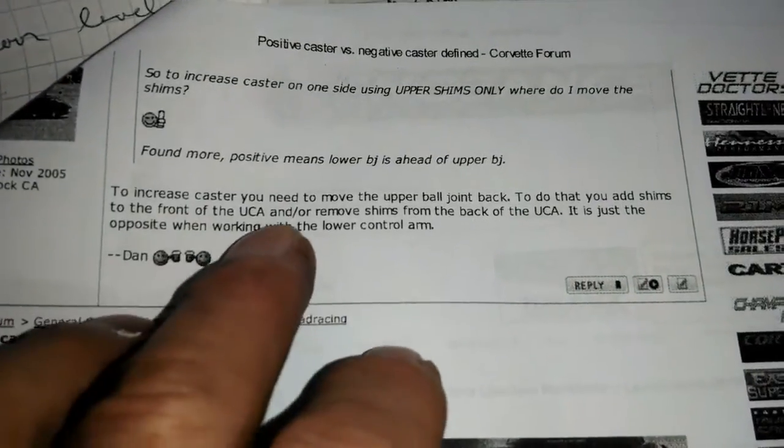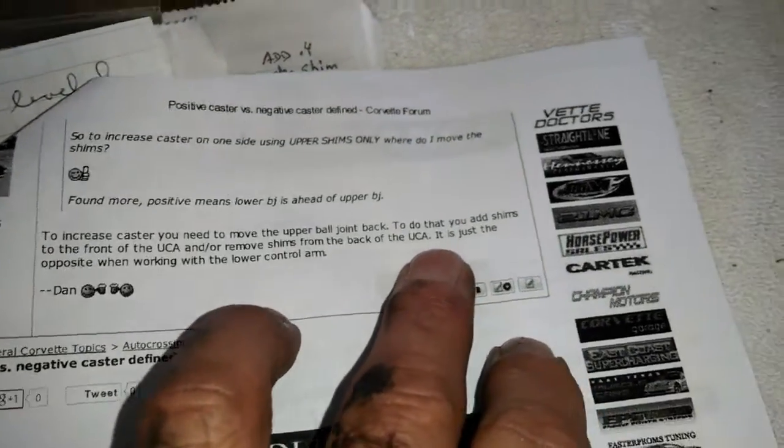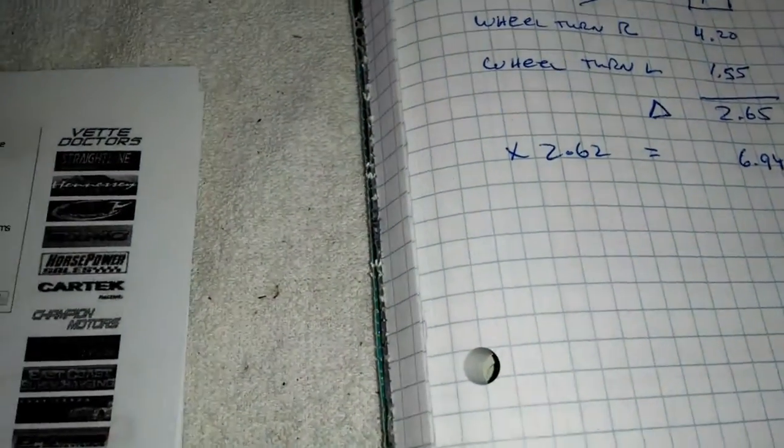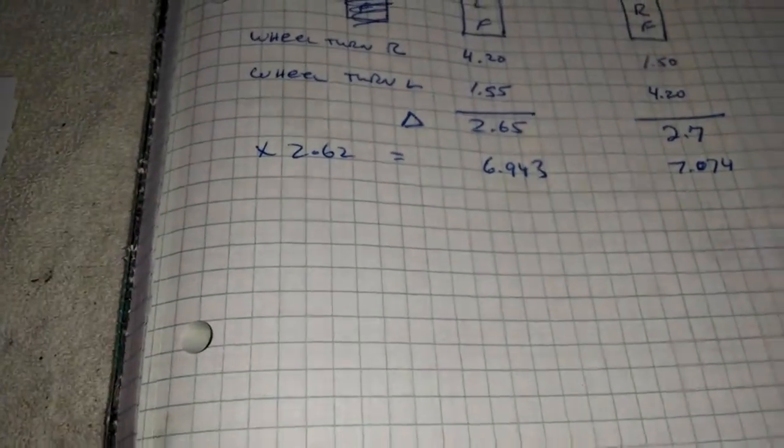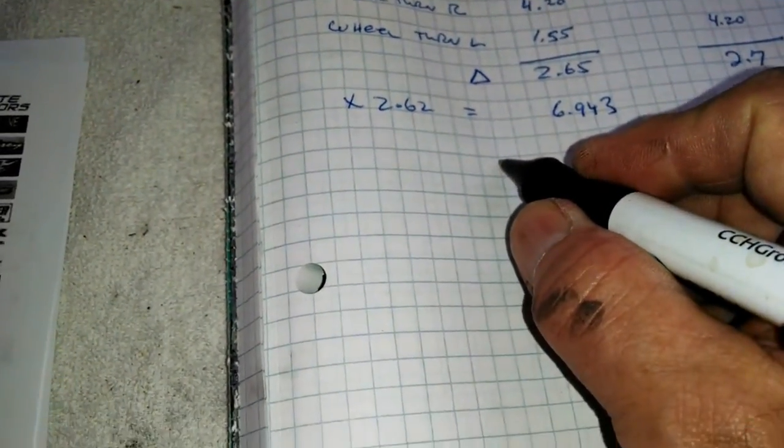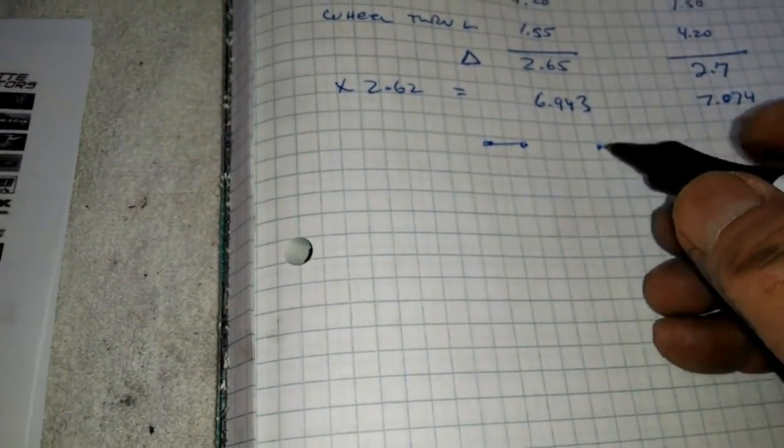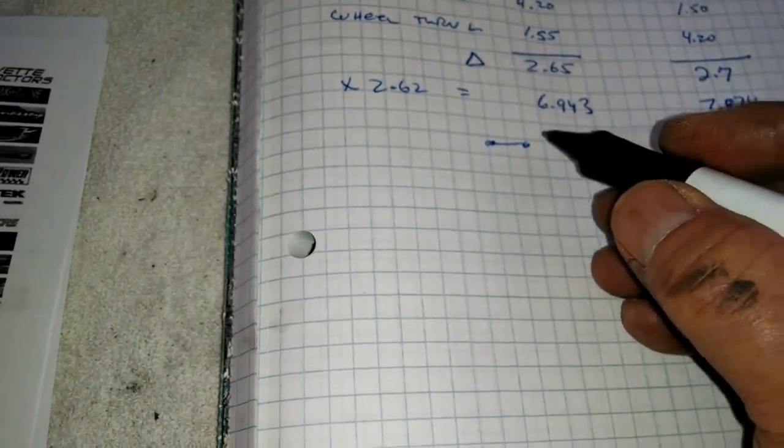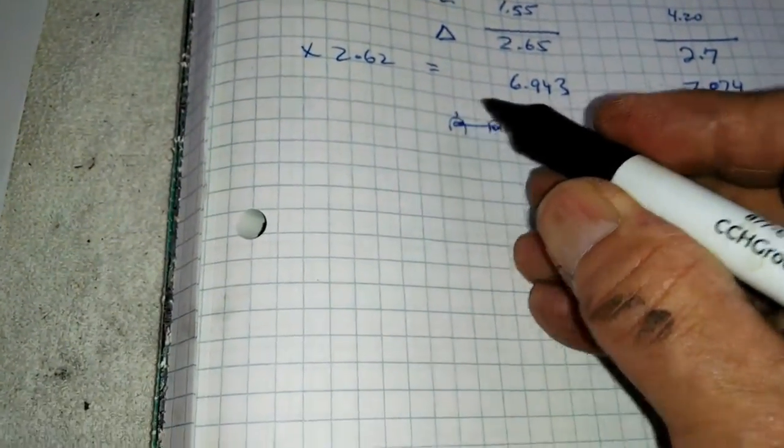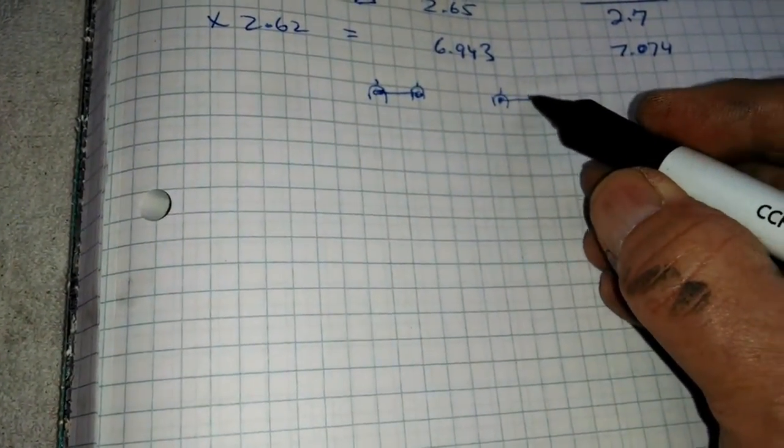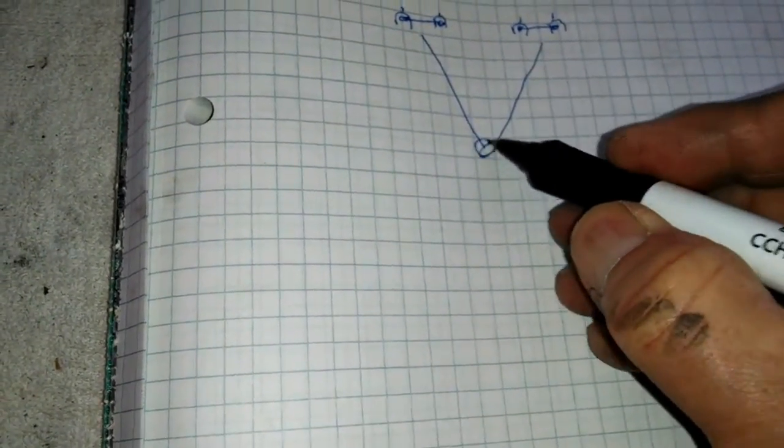So let me give you just a little bit more information here. This is off of a forum on caster. The Corvette has positive caster, which means the lower ball joint is position forward of the upper ball joint. And picture this. Here's your wheel. There's the center line of the wheel. There's your upper ball joint. There's your lower ball joint. Now it's exaggerated a little bit just to make it clear. So that's positive caster on a Corvette.